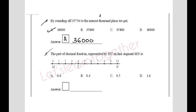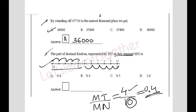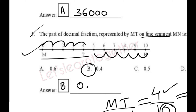Question 5: The part of decimal fraction represented by segment MT on line MN. MT spans 0 to 4 units, and MN spans 0 to 10 units. So the fraction is 4/10. Since there is one zero, we place the decimal: 0.4. The answer is option B: 0.4.